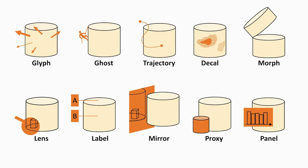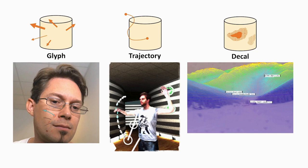We present 10 design patterns for visualizing data in the context of physical reference. Our design patterns include embedded views that encode data directly on the physical reference, such as glyphs, trajectories, and decals.